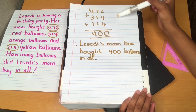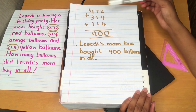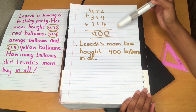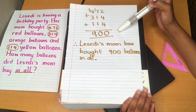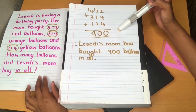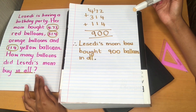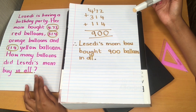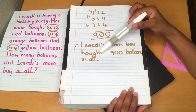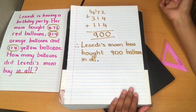We've shown our working out: 472 plus 314 plus 114 equals 900. Then we answered our word problem: 'How many balloons did Lacedi's mom buy in all?' Lacedi's mom bought 900 balloons in all.